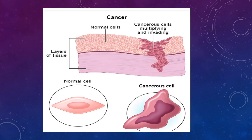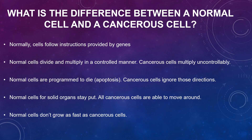Right here you can see the cancerous cells compared to the normal cells — how they've invaded and spread through into a different layer of tissue. The shape and size are different as well. That's just an example of what a cancerous cell would look like compared to a normal cell.